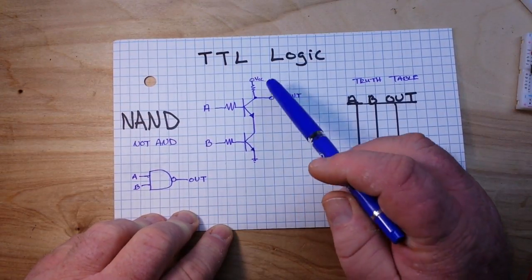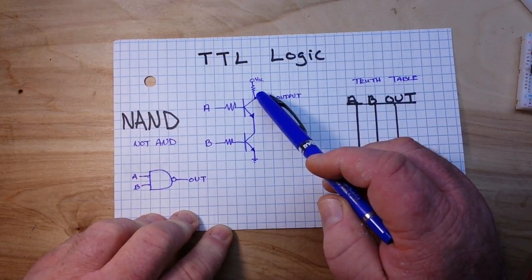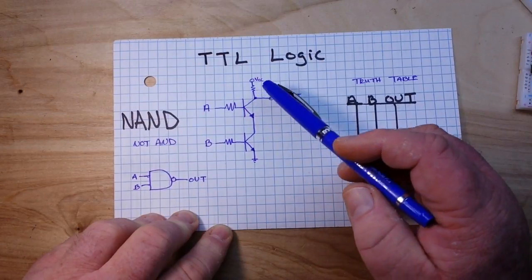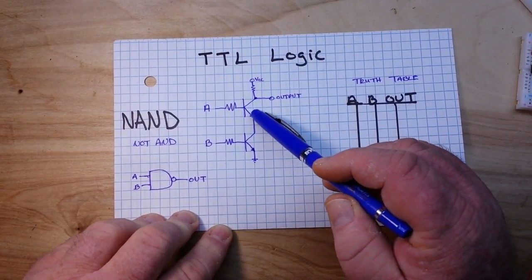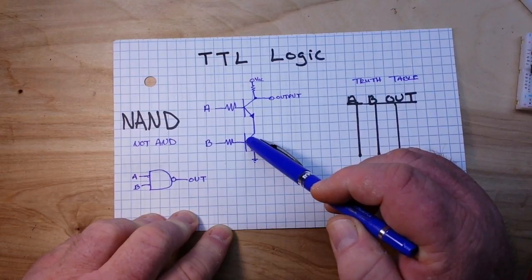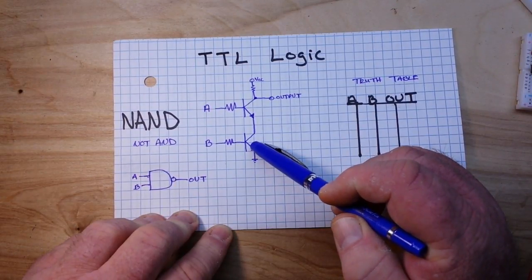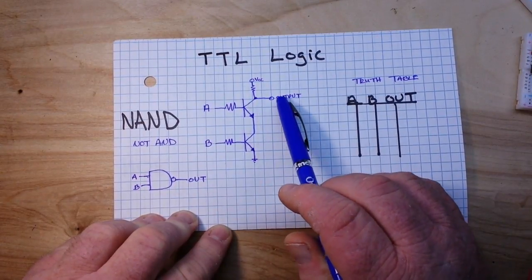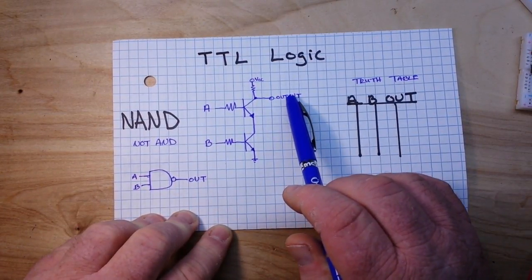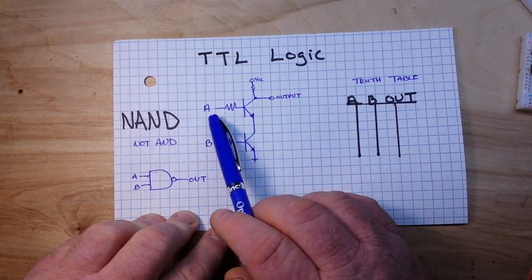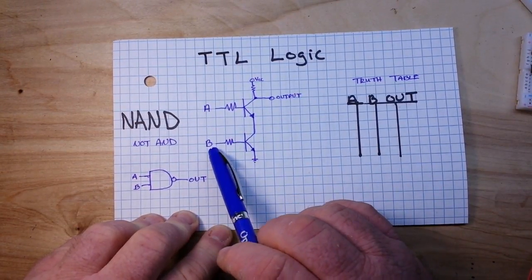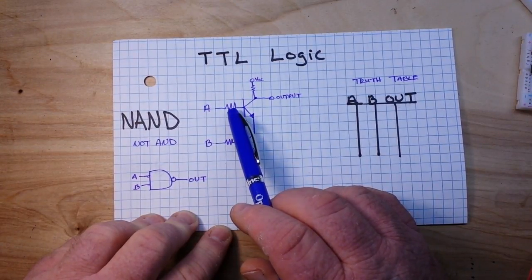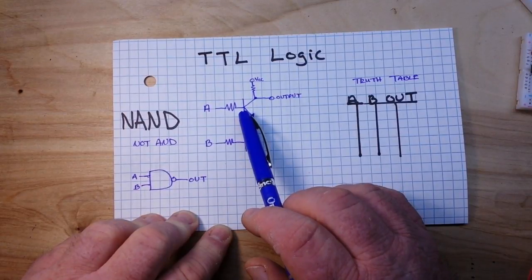We have VCC coming down to the collector of the first transistor and then the emitter feeds the collector of the second transistor and its emitter goes to ground. Now the output is tied to VCC and in this case we're gonna use a simple LED for an output, and then we have our two inputs A and B which are both current limited by a resistor because these transistors don't need a whole lot of current.